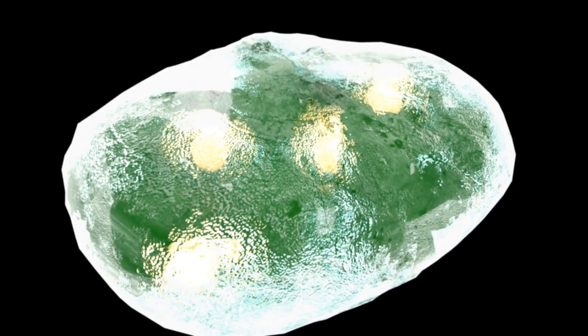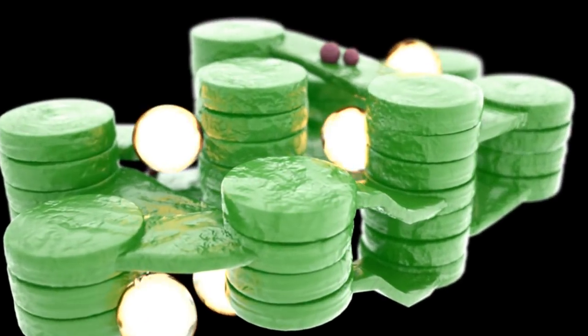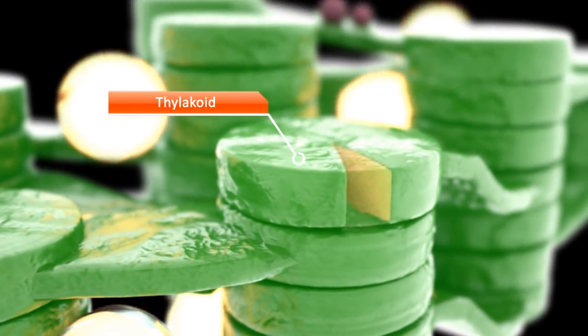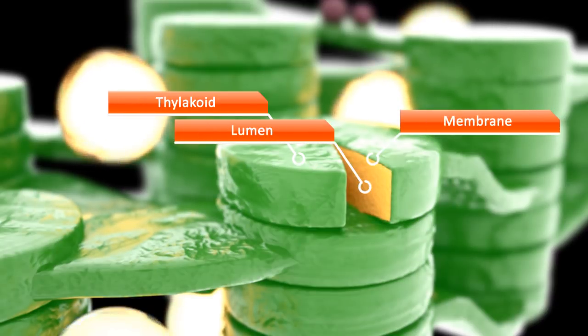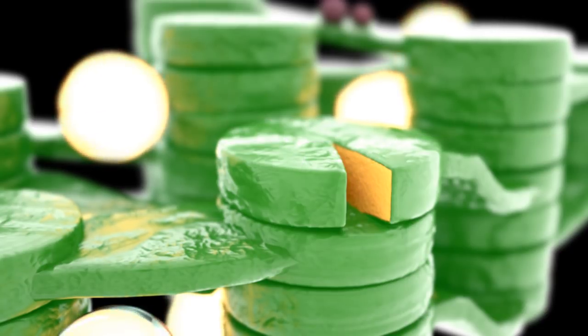Chloroplasts have a protective membrane. A liquid, called stroma, is found inside the chloroplast. Thylakoids are embedded in this liquid. Thylakoids consist of a thylakoid lumen surrounded by a membrane where photosynthesis takes place.